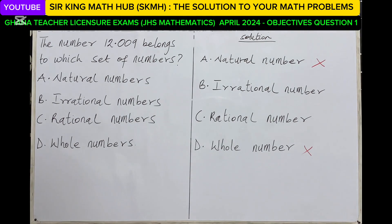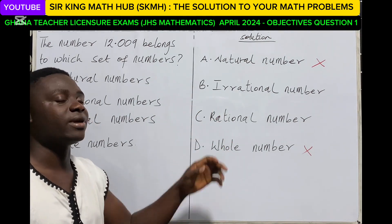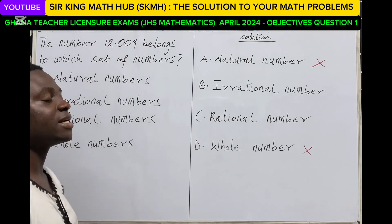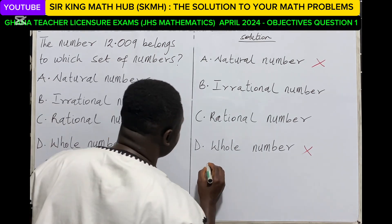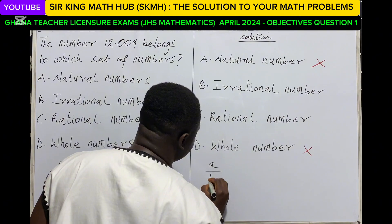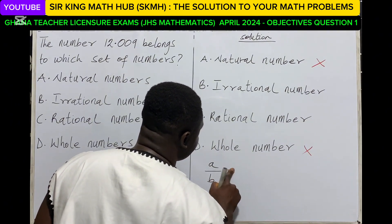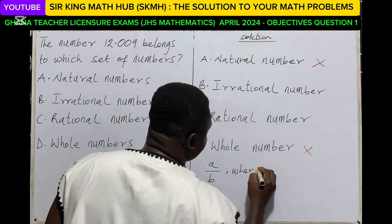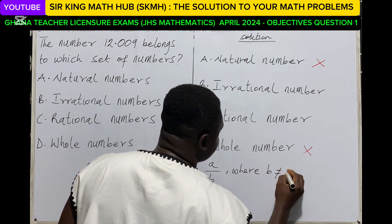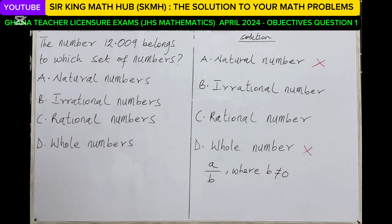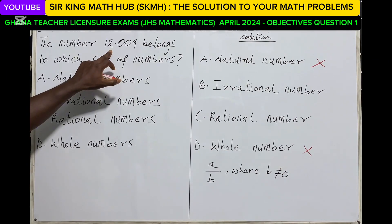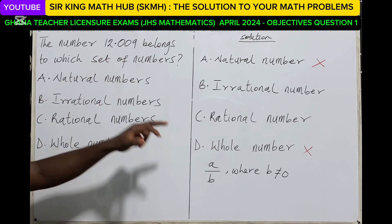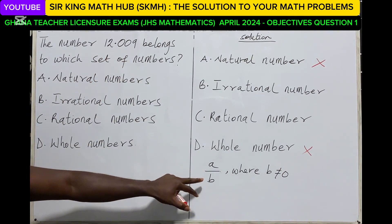So it is alternating between irrational number and rational number. So what then is a rational number? Recall that a rational number is a number that can be written in the form A over B, where B must not be equal to zero.